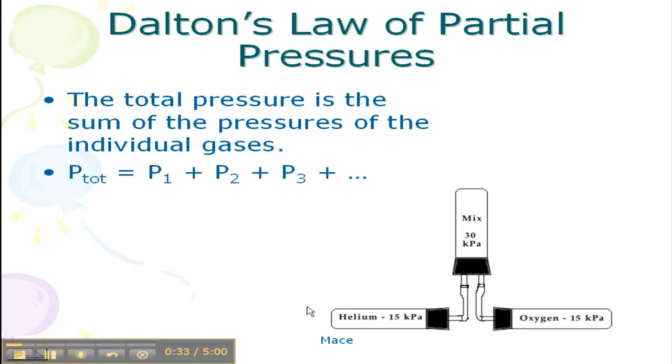So if we have a mixture of helium that has a pressure of 15 kilopascals and oxygen that has a pressure of 15 kilopascals, we simply add those together and you get a total pressure of the mixture to be 30 kilopascals.